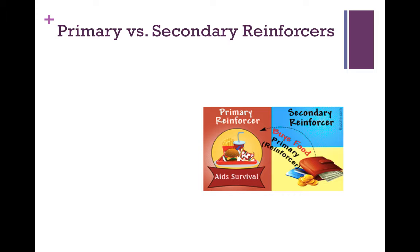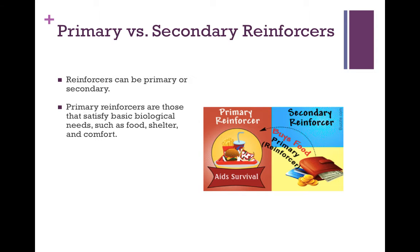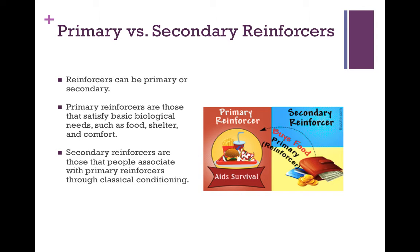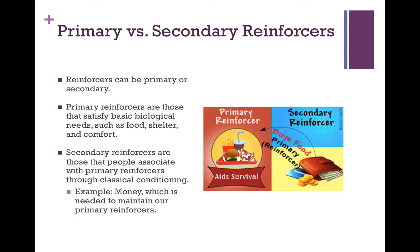There are also different types of reinforcers, classified as primary and secondary reinforcers. Primary reinforcers are those that satisfy basic biological needs such as food, shelter, and comfort. Secondary reinforcers are those that people associate with primary reinforcers through classical conditioning. An example would be money, which is needed to maintain our primary reinforcers.